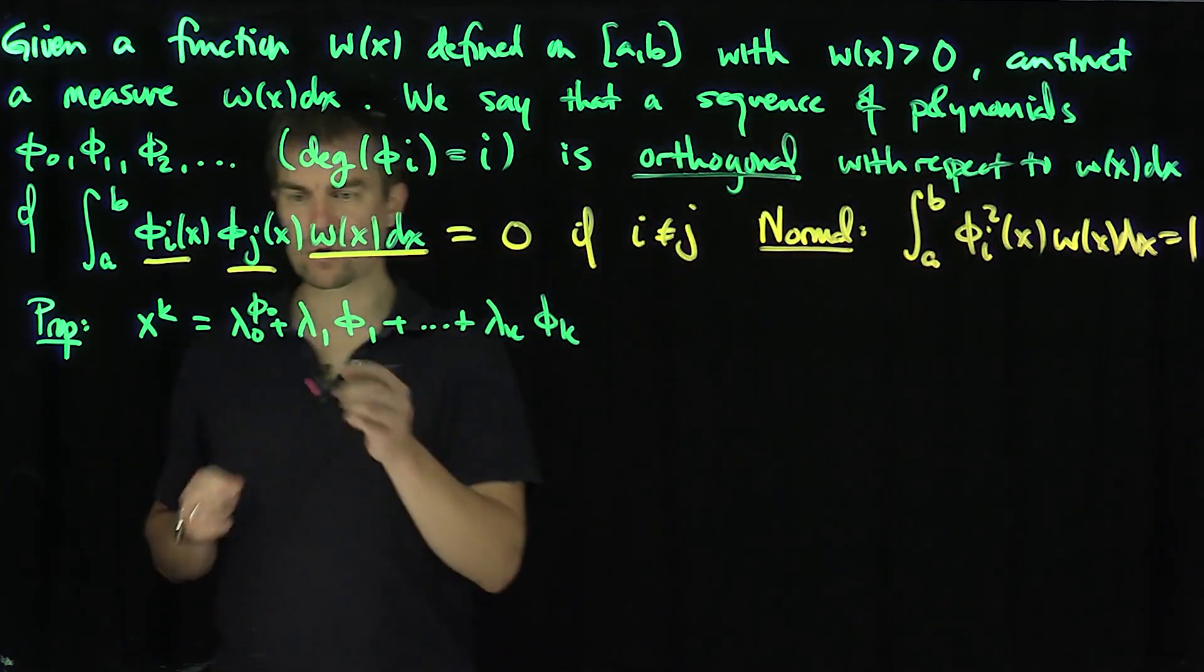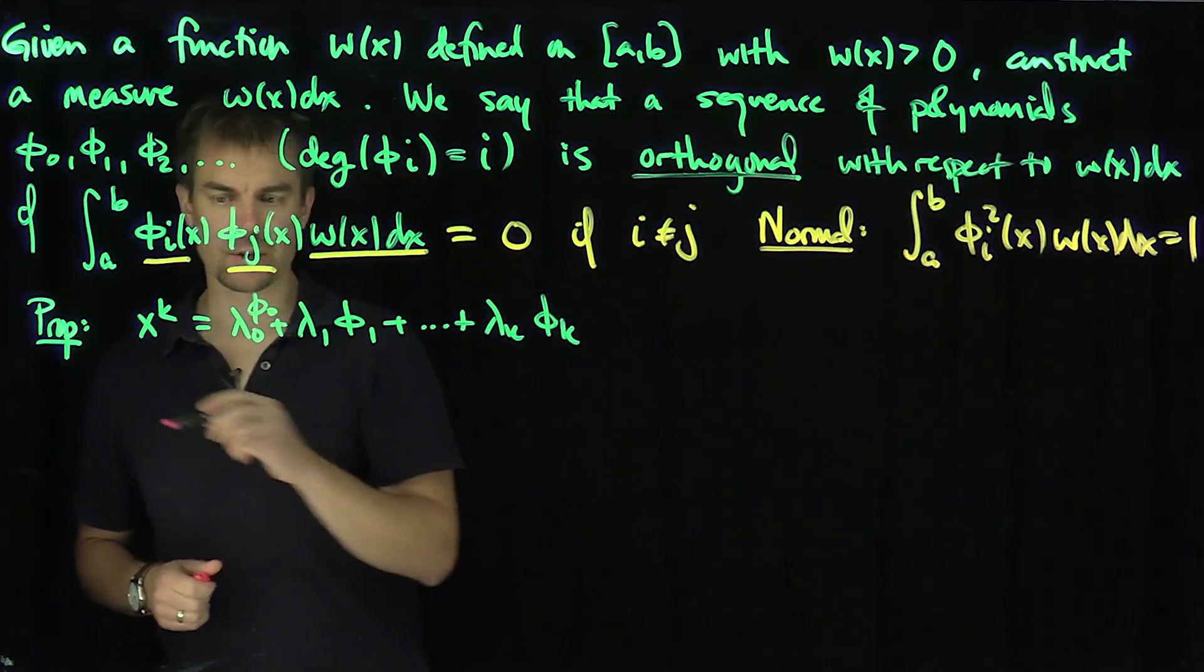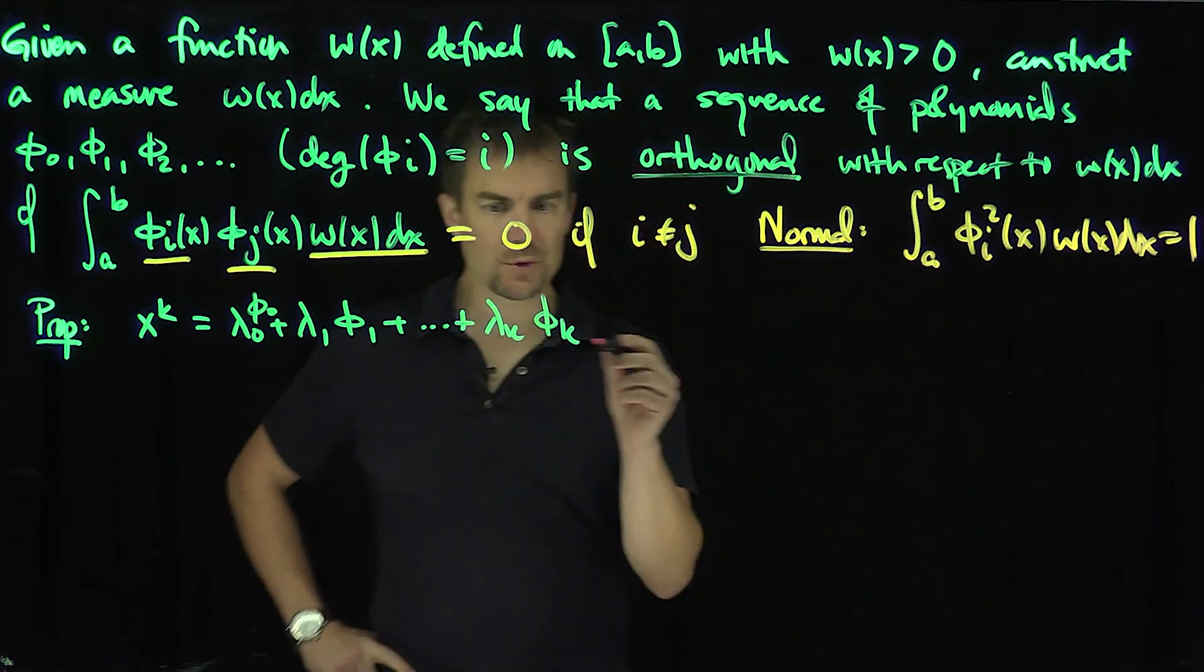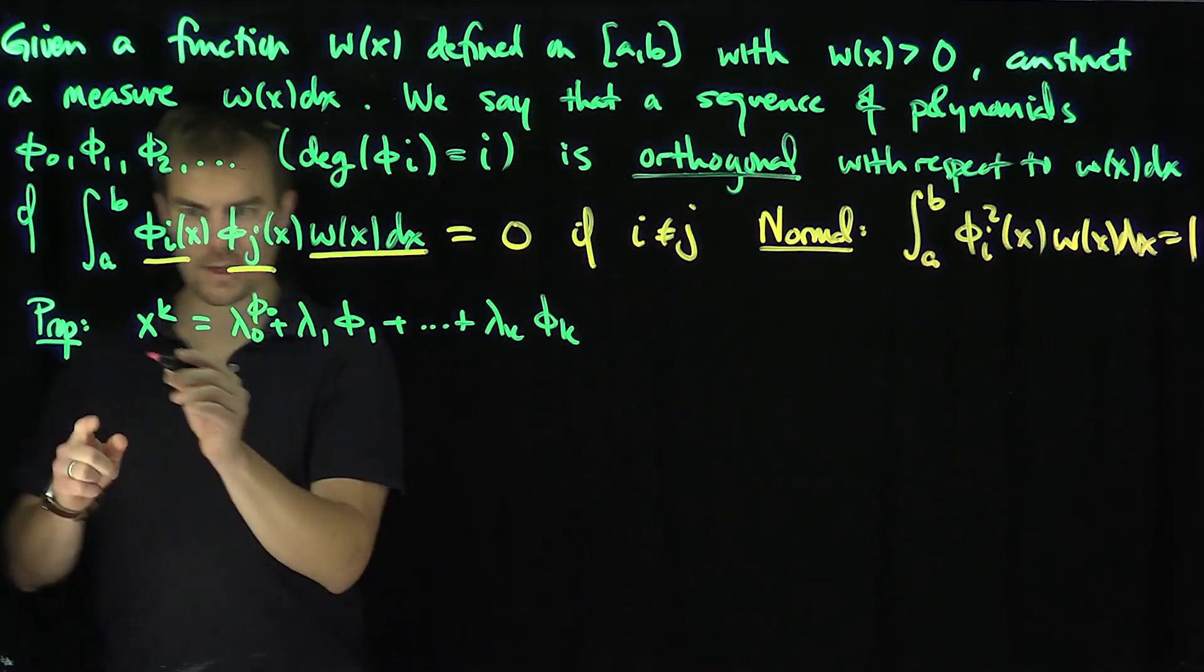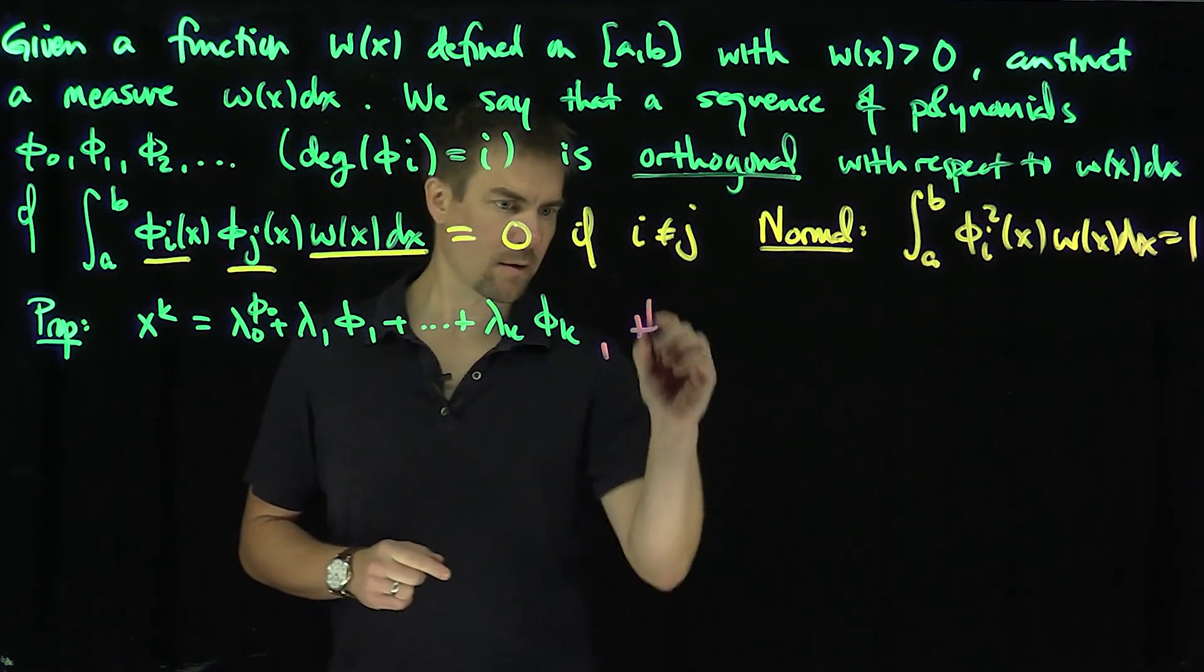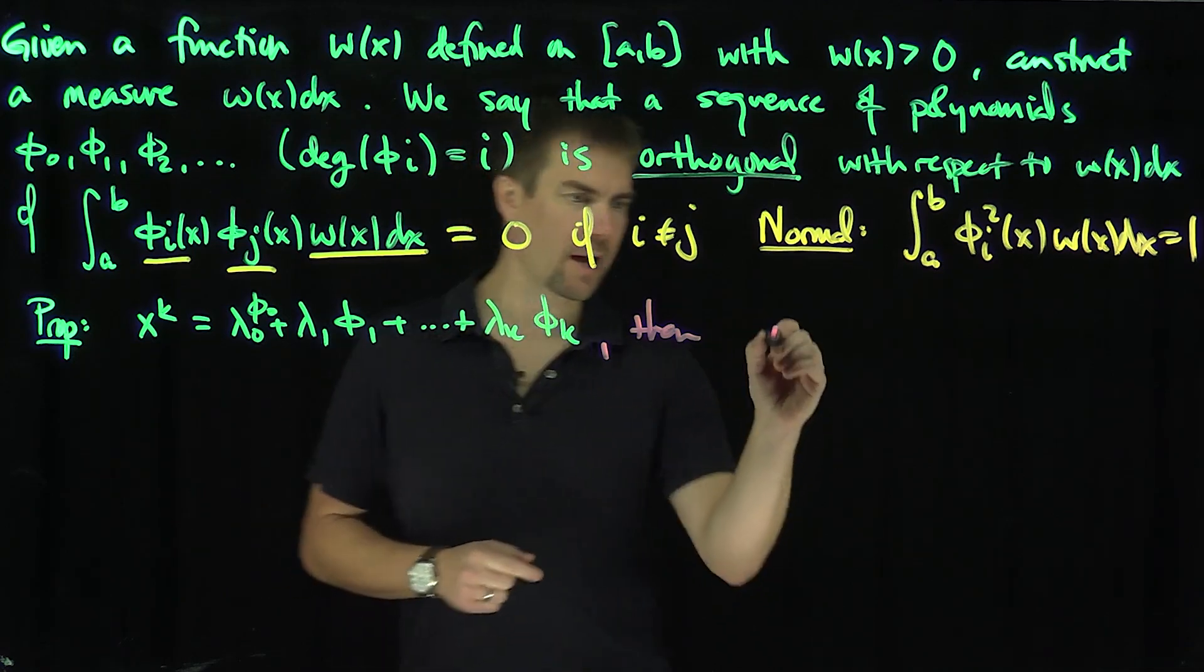We'll take this proposition and find out what these λ₀, λᵢ's are. Let's do a side calculation, let's figure out what the λᵢ's are going to be.